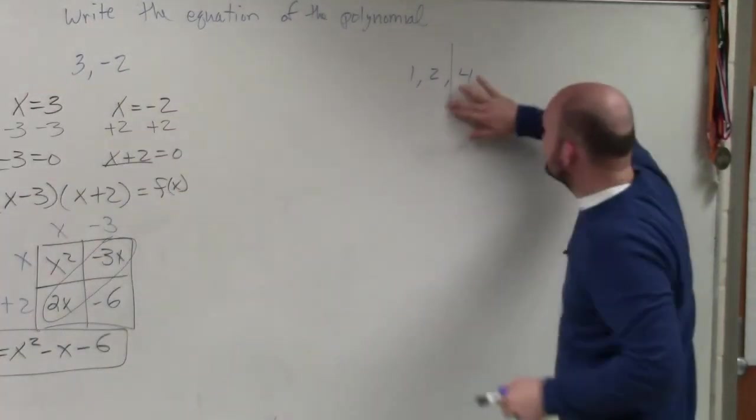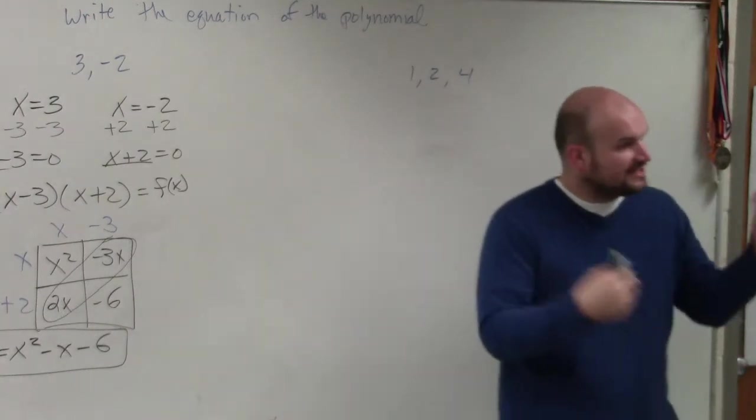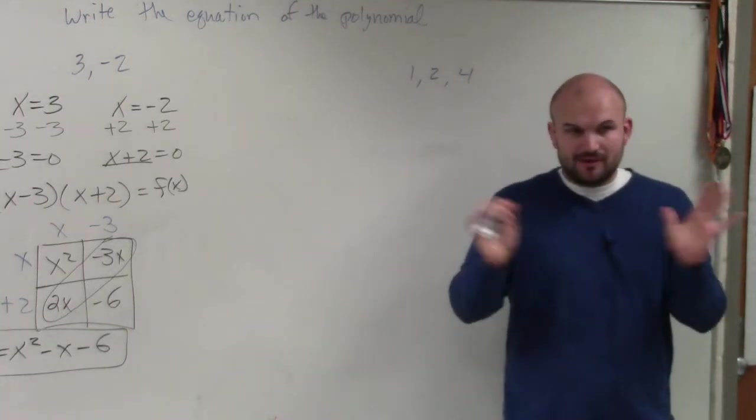So the first important thing, again, as I mentioned, when you're given three zeros is to only take two of the zeros at a time. Don't try to overdo everything.